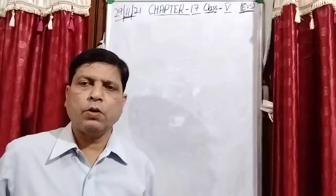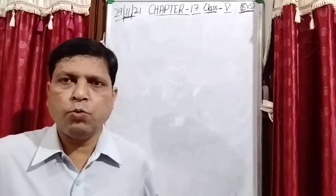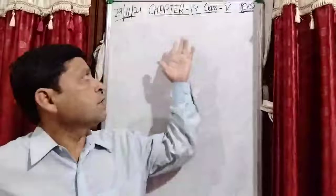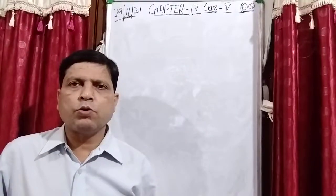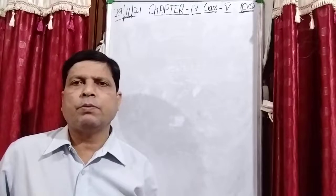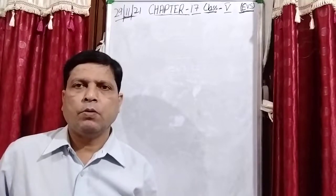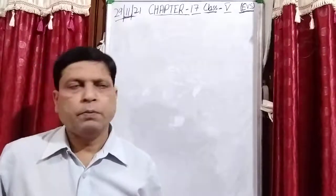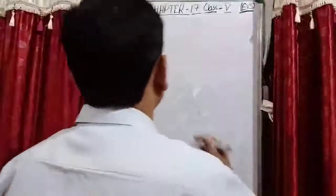Good morning, students of class 5. How are you? I hope you all are fit and healthy. Welcome back to your easiest class. Today's date is 29 November 2021 and I am teaching you chapter number 17. The name of the chapter is British Rule and the First War of Independence.